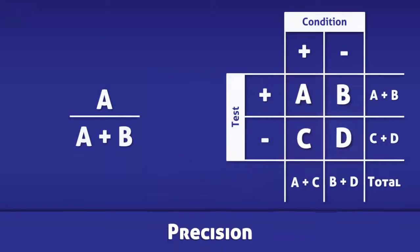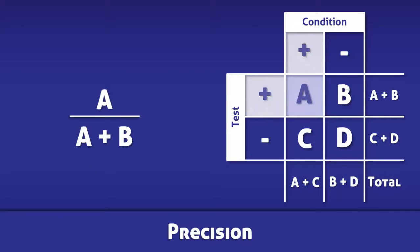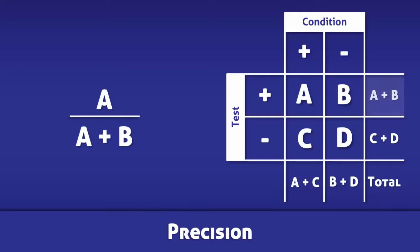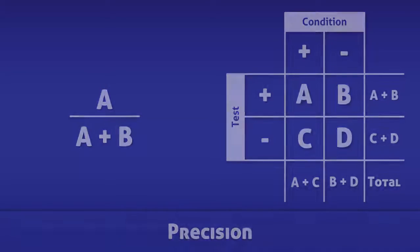Once more, the precision of a test is calculated by dividing the number of true positives by the total number of positive tests.